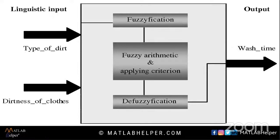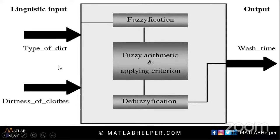Then comes the use of defuzzification inference, which converts the fuzzy values back into crisp values. Now let's come to a basic real-life example of how this works. This is the block diagram of a washing machine. The goal is to create a fuzzy logic controller for a washing machine that will compute the appropriate washing time based on certain information about the clothes to be washed. The user manually sets the washing time based on the volume of clothes, and sensors can detect the volume and dirtiness of the clothes.